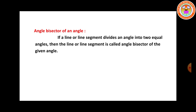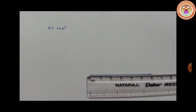If a line or line segment divides an angle into two equal angles, then the line or line segment is called the angle bisector of the given angle. For example, 60 degrees — we are going to divide it into two equal angles: 30 and 30.